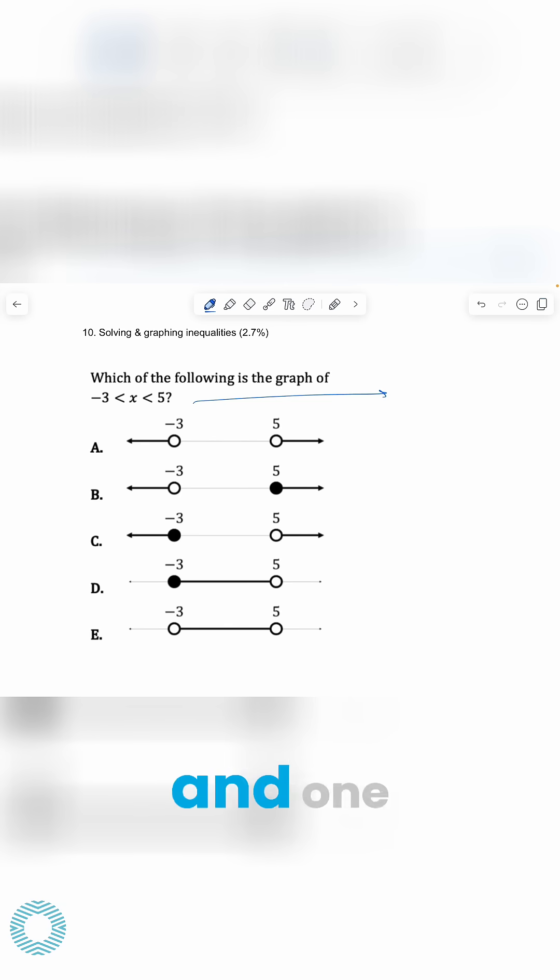So really this is two in one, right? And that's why you see two different graphs kind of in one here, almost. So it's really negative three is less than x, and then x is less than five.